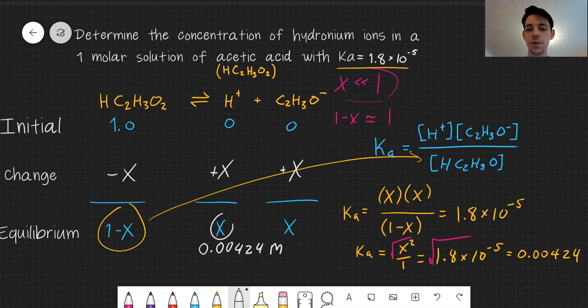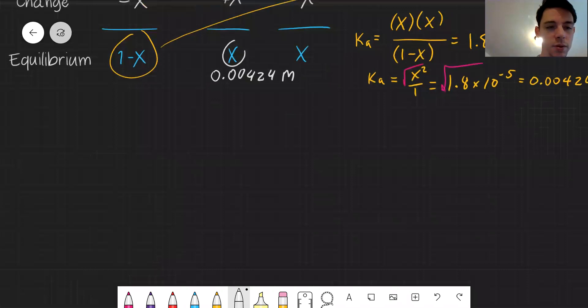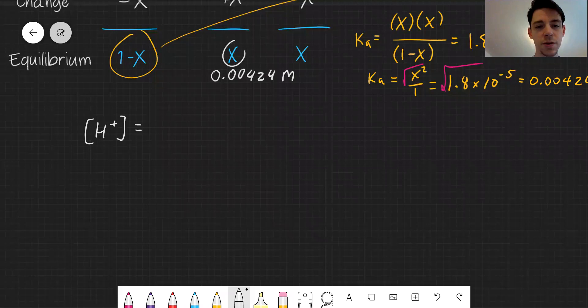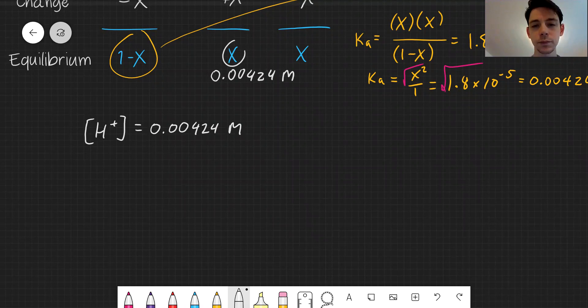We're going to take this one step further. I'm going to leave that answer up. If hydronium concentration is 0.00424 molar. What would the pH be of this solution?